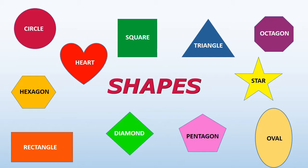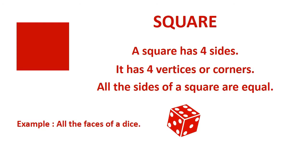Let's start with square. A square has four sides. It has four vertices or corners. All the sides of a square are equal. Example: all the faces of a dice.